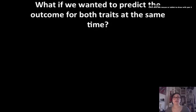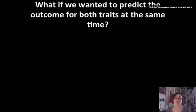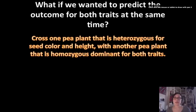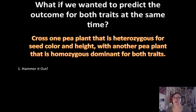But what if we wanted to predict the outcome of both traits at the same time? What if we wanted to see seed color and height move from one generation to the next simultaneously — to predict what our offspring are going to look like in terms of seed color as well as height? So let's see what an example might look like. Here's our word problem. Whenever we have word problems, the very first thing we want to do is hammer it out, so let's read carefully using our reading strategies.